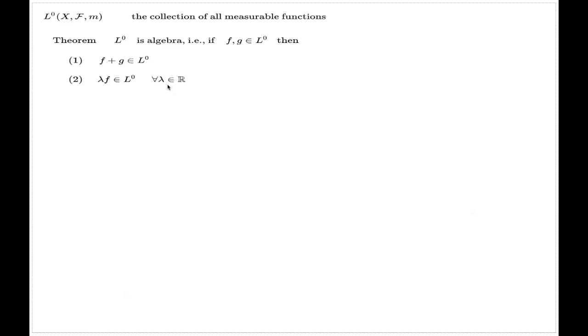These two alone actually show that the collection of all measurable functions is a linear space, but on top of that we also can say that the product of two measurable functions will be a measurable function, and that concludes the statement that it is an algebra.